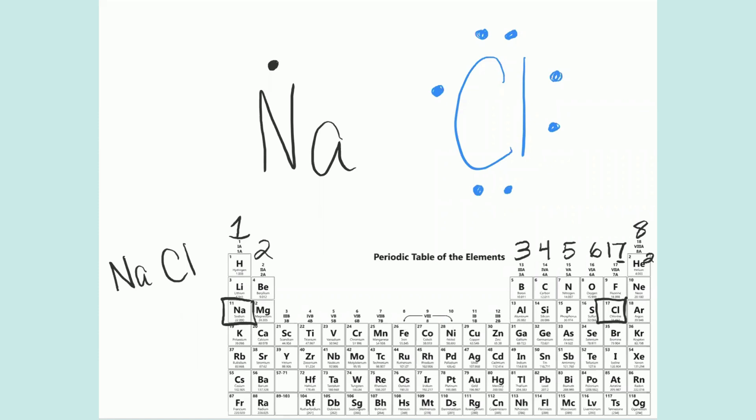As we know, elements or atoms would like to be full outer shells. So chlorine just needs one more electron to be happy. So where is it going to get that one from? It's going to steal it from sodium. So we would draw an arrow. That arrow shows an ionic bond because it's showing that one electron is leaving sodium and going to chlorine.